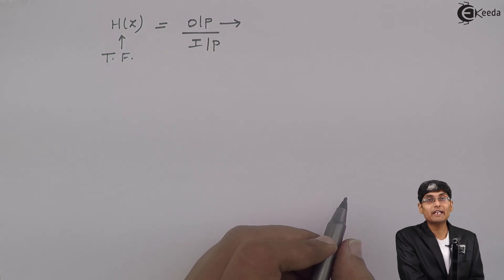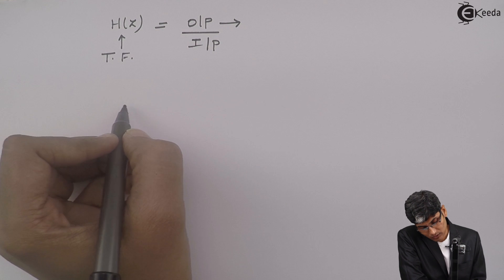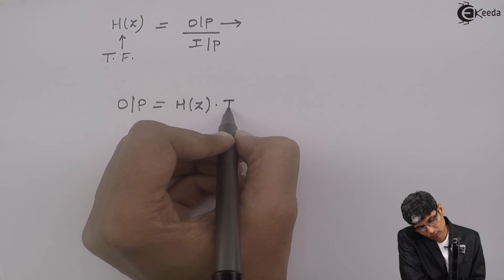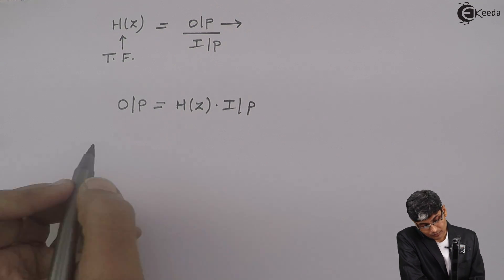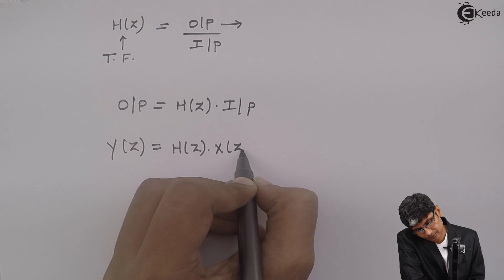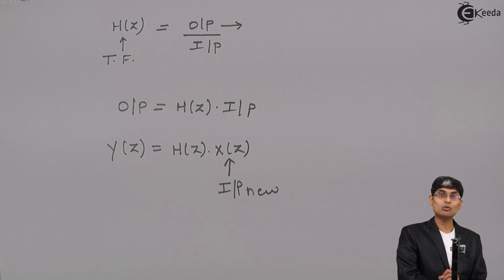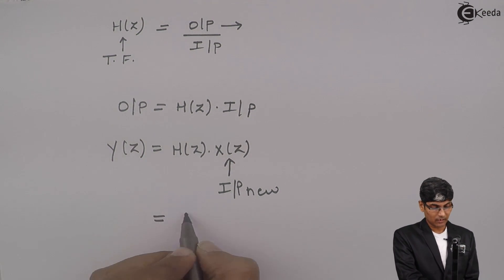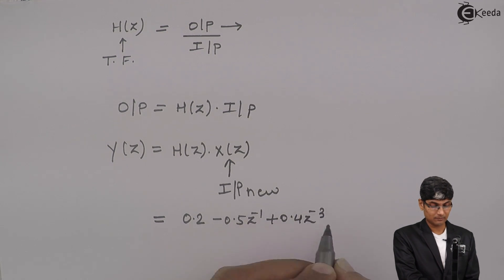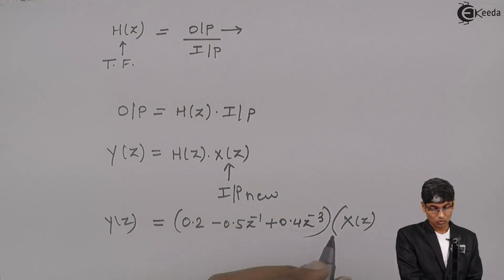They have asked me to find an output for a particular input. If I know the transfer function and the input, I can get the output by just multiplying the input. So my output will be equal to my transfer function into my input. Mathematically: Y(z) = H(z)·X(z), where X(z) is my new input for which I want to find the output.